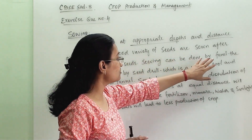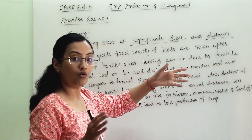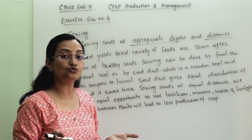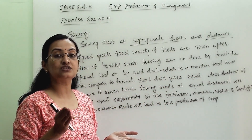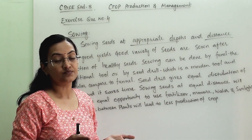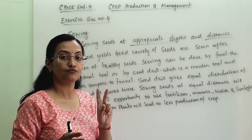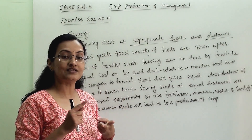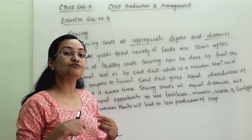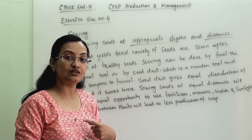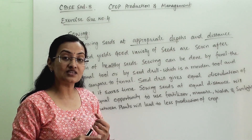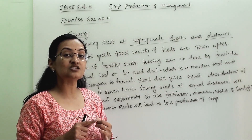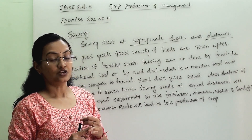Sowing can be done by funnel, which is a traditional tool, and the modern tool we use is a seed drill. So there are two types of tools for sowing: funnel and seed drill. Seed drill is preferred over funnel because it sows at equidistance and maintains proper depth for the seed.